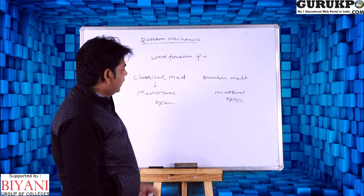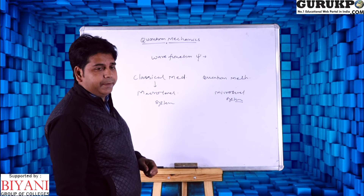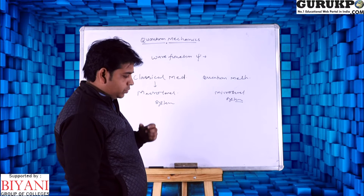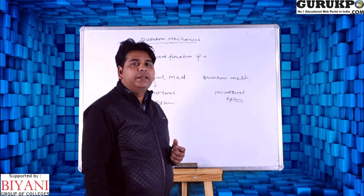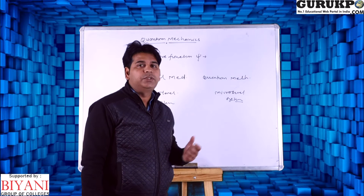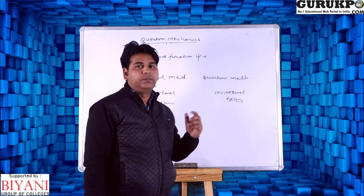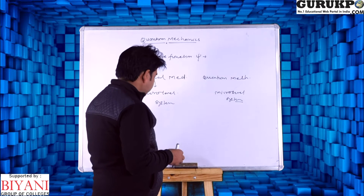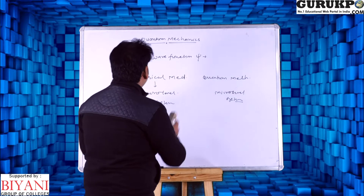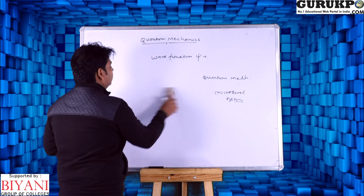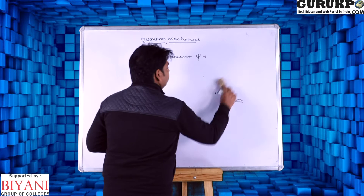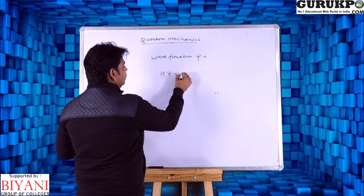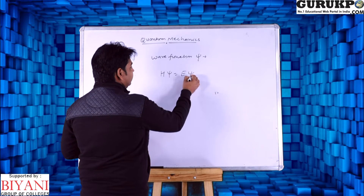Today I am going to explain how we can apply the Schrödinger equation in quantum mechanics. As we know, the linear equation is H psi equal to E psi.